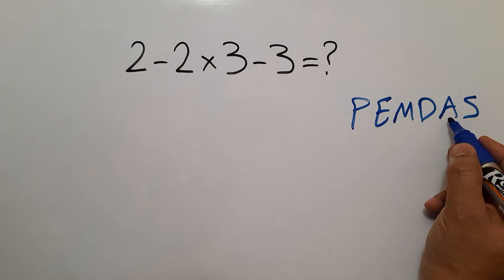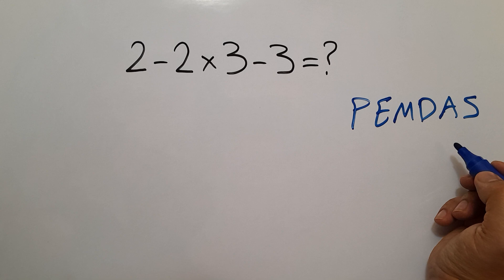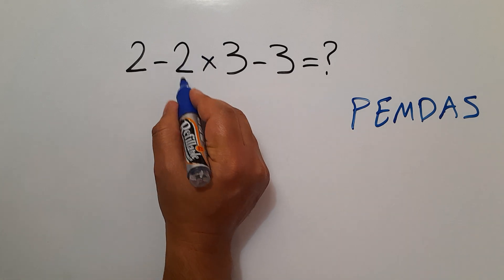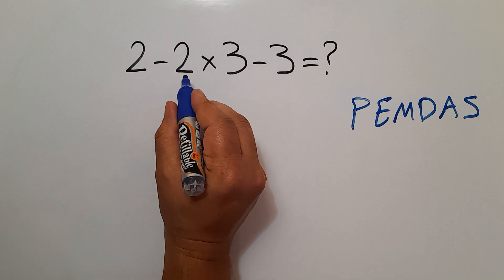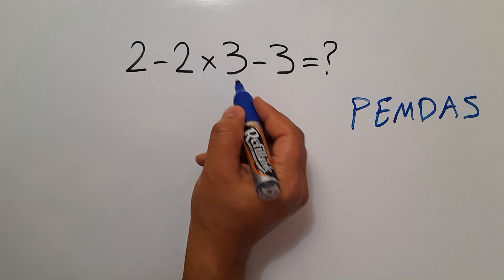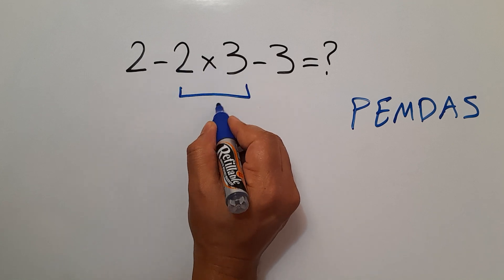And the same goes for addition and subtraction. So here we first do this multiplication, then subtraction. 2 times 3 gives us 6.